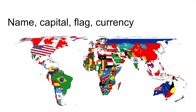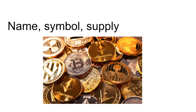But first, let's describe the notion of an interface. An interface can be used to describe the properties that are shared by different objects. If we think about countries, for example, we have many different countries in the world, but they share similar characteristics — every country has a name, every country has a capital, every country has a flag and a currency. In a similar vein, there are many different cryptocurrency tokens in the world, but each token has a name, a symbol, and a supply.